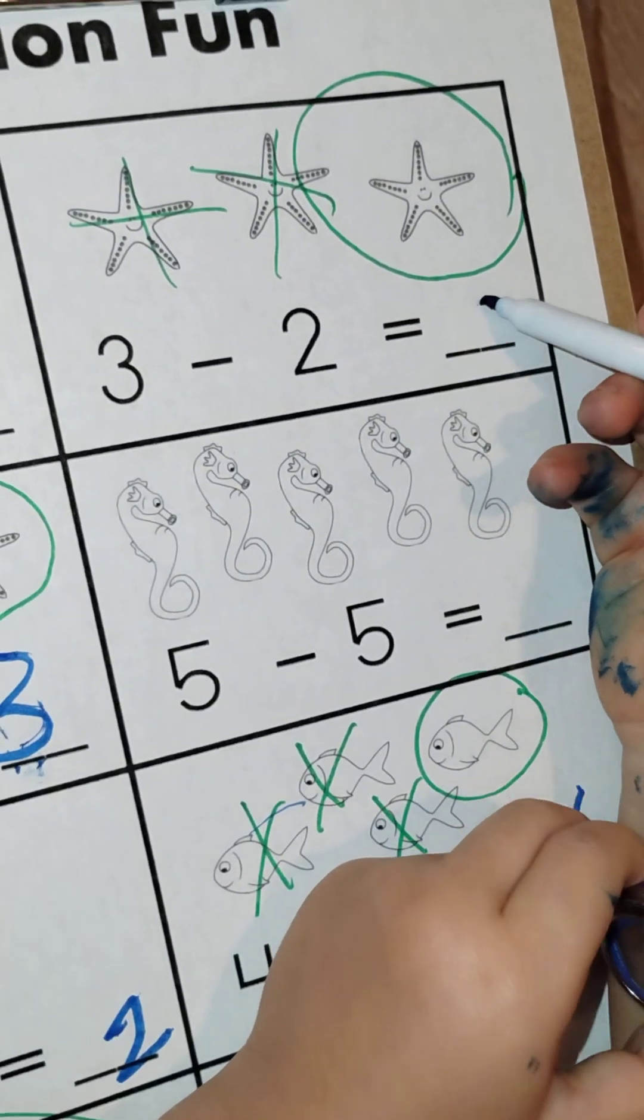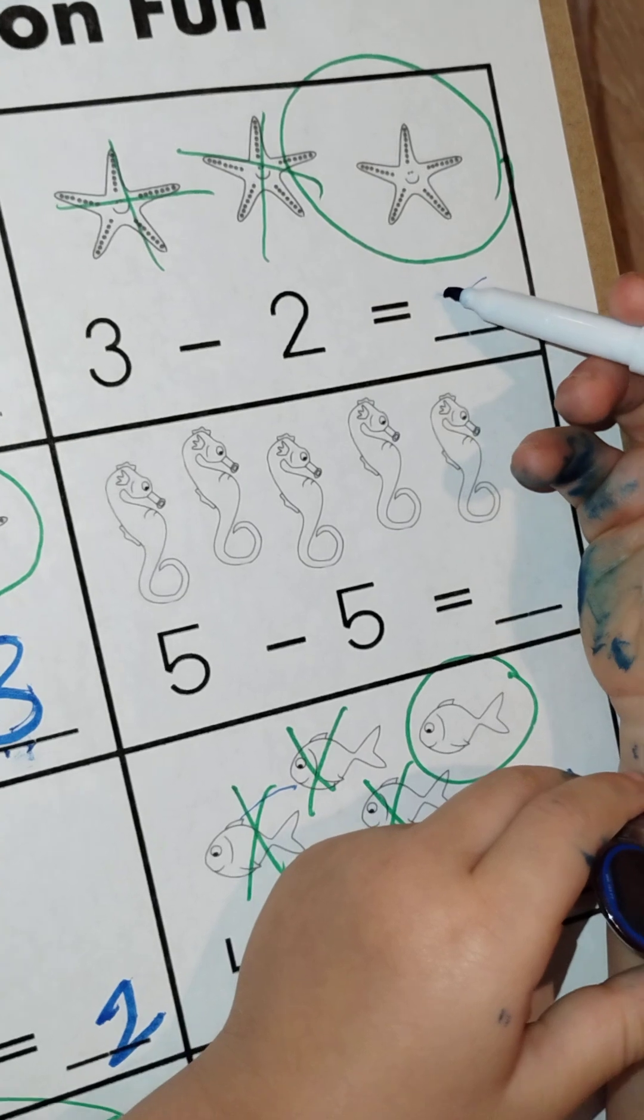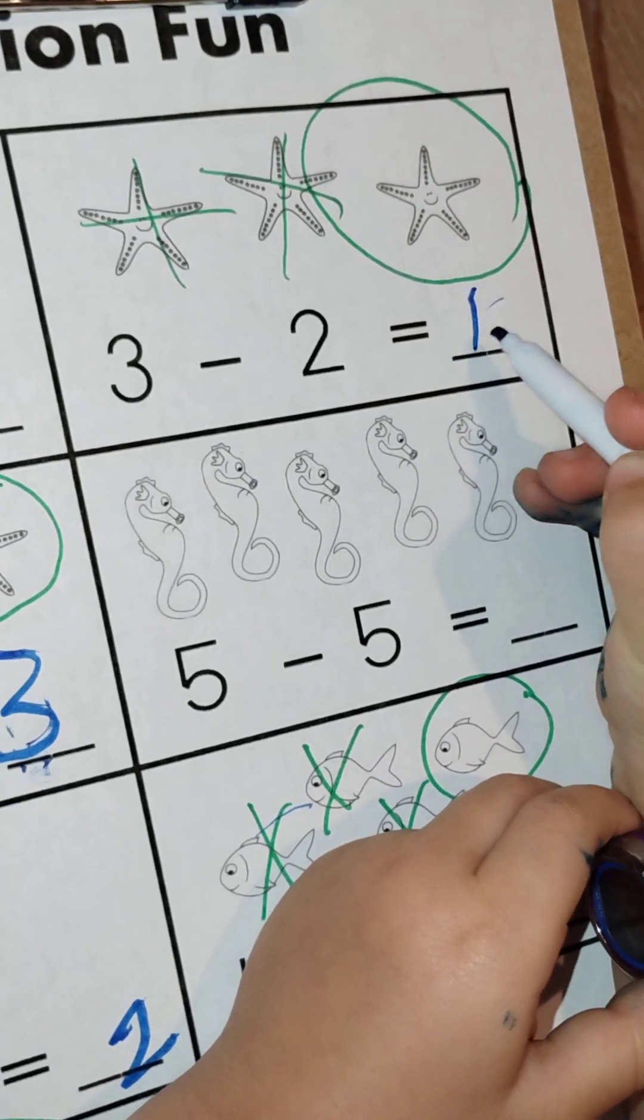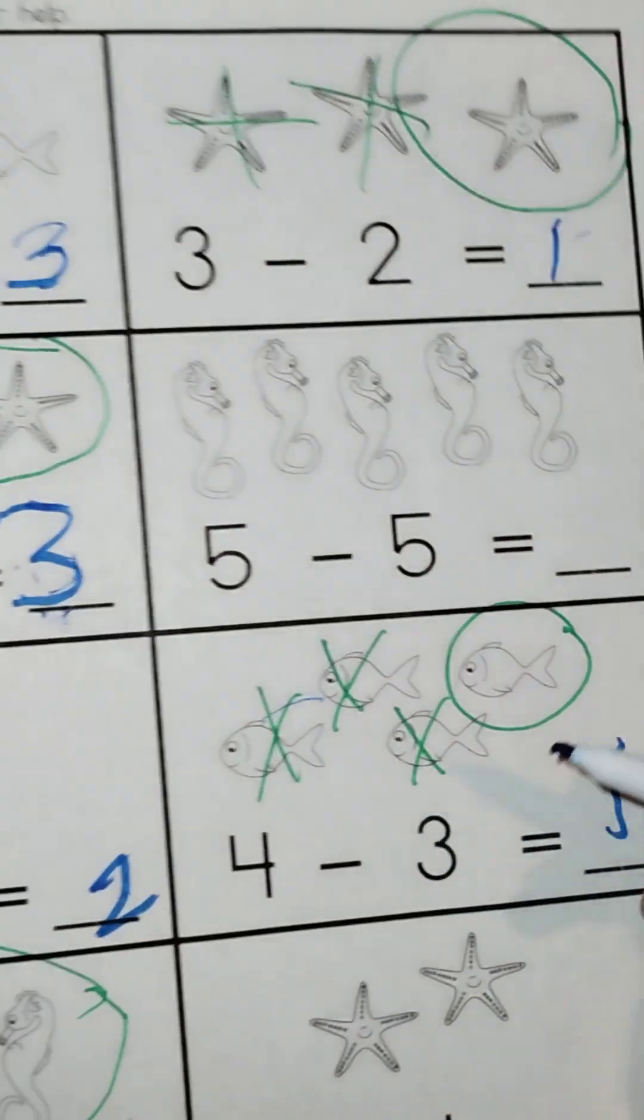Five. One. Wow. There you go. Do you need help, or can you write the number one? There we go. Yes. Okay, what is this?